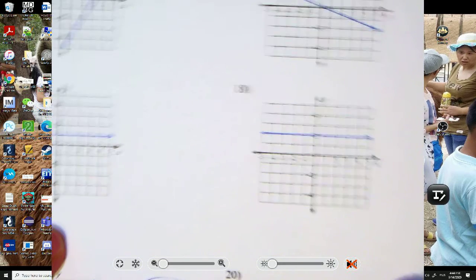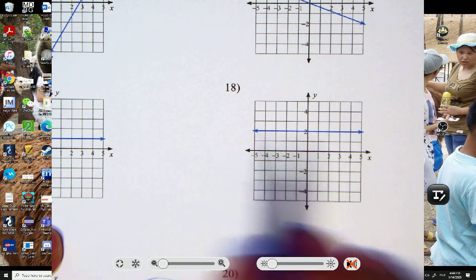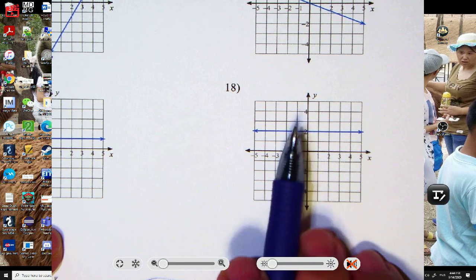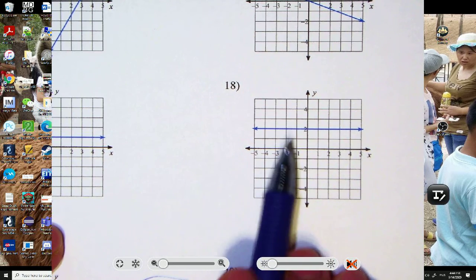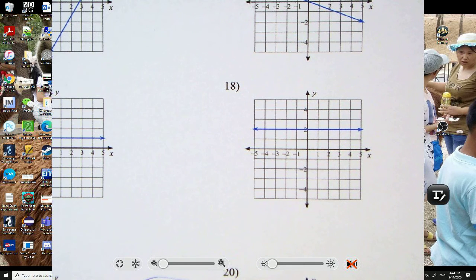Here's a bonus question. This will be y equals whatever the y value is. A horizontal line is y equals. So number 18 is y equals 2. I know you didn't ask for that.